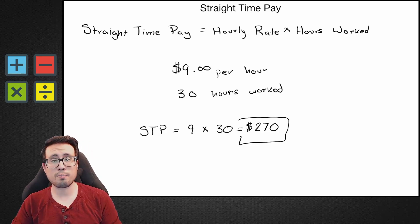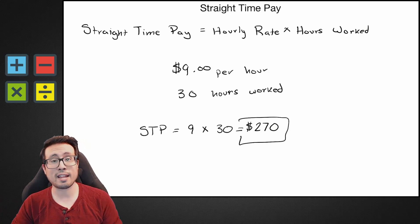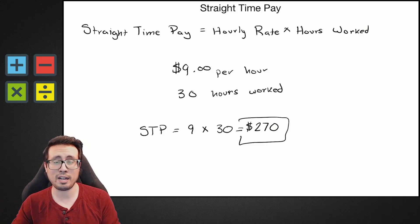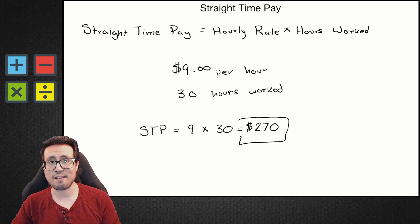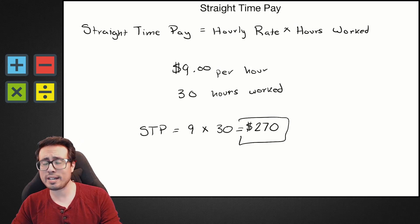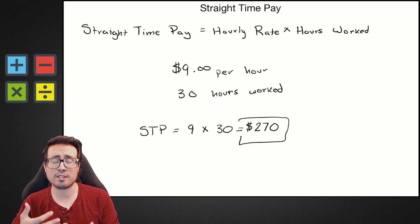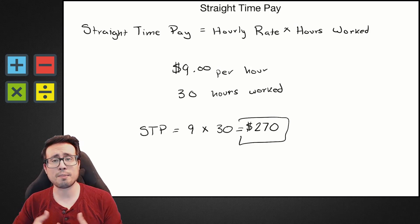Our straight time pay this week would be $270. Taxes and deductions will be taken out of that, but at least we know our straight time pay is $270. That's straight time pay — a very easy concept, it's just a matter of knowing the equation and knowing what to plug in where.